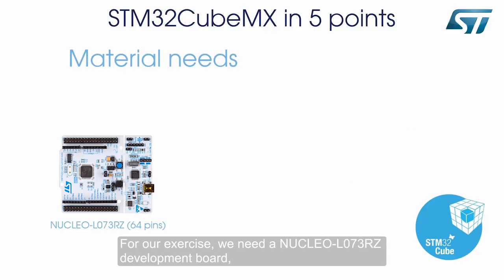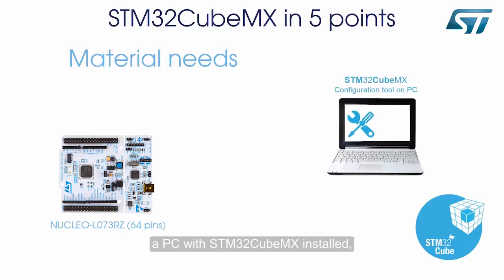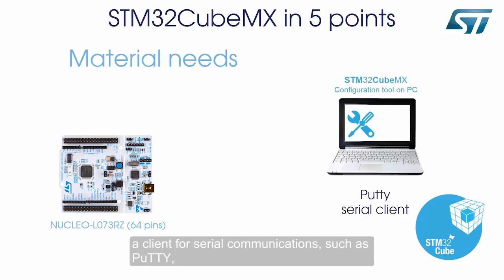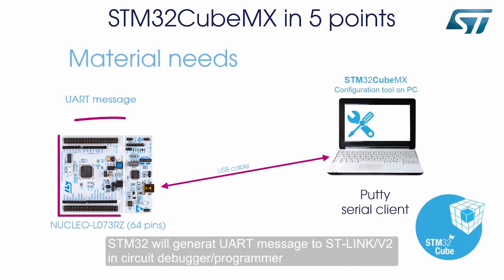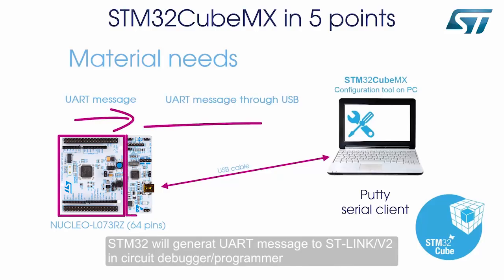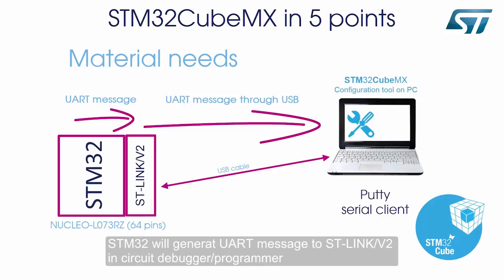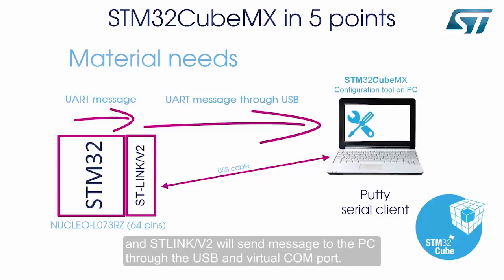For our exercise, we need a Nucleo L073RZ development board, a PC with STM32CubeMX installed, a client for serial communications such as Putty, and a Type-A to Mini-B USB cable. STM32 will generate a UART message to the STLinkV2 in-circuit debugger programmer, and STLinkV2 will send a message to the PC through the USB virtual COM port.